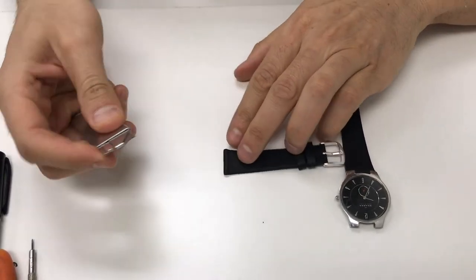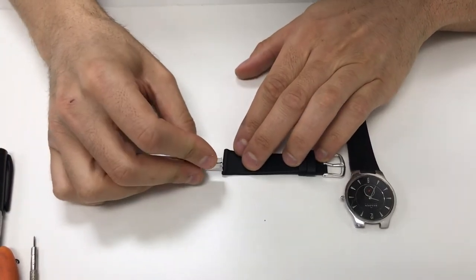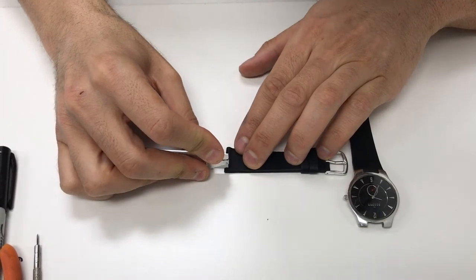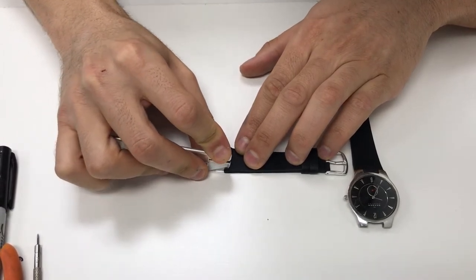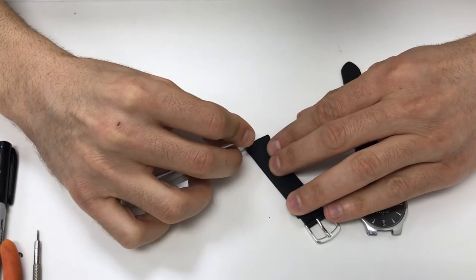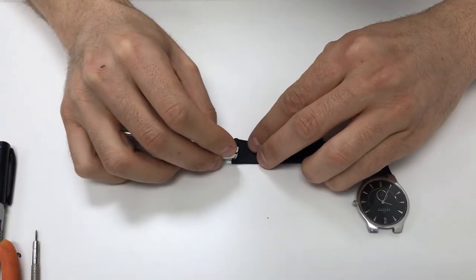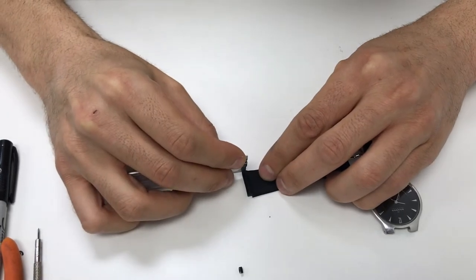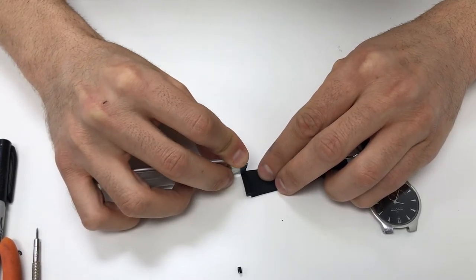I'm going to grab my razor cutter. I'm going to shave off about one millimeter on each side. You can see that little piece of leather right there that just cut off.